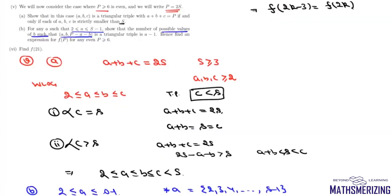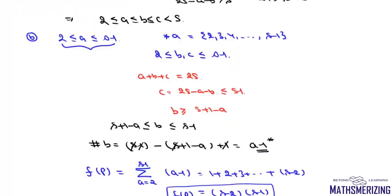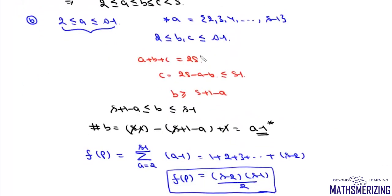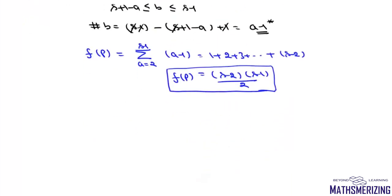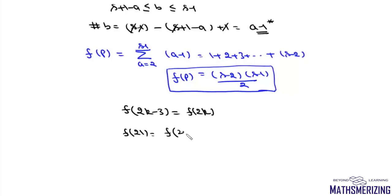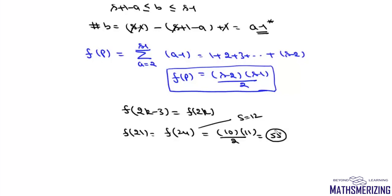Part 6: Find f(21). Since 21 is odd, we use the result f(2k-3) = f(2k). Setting k = 12, f(21) = f(24). For f(24), s = 12, so f(24) = (s-2)(s-1)/2 = (10)(11)/2 = 55. Therefore f(21) = 55.